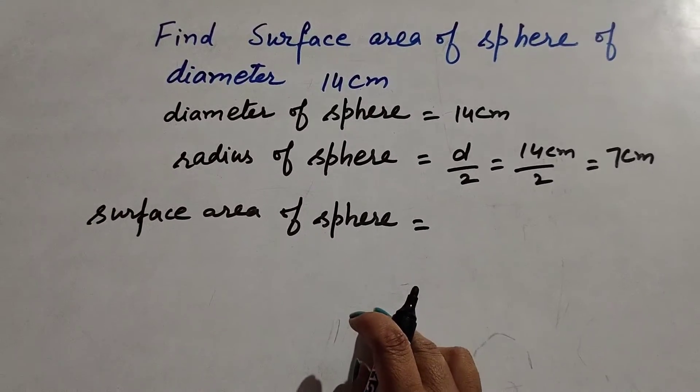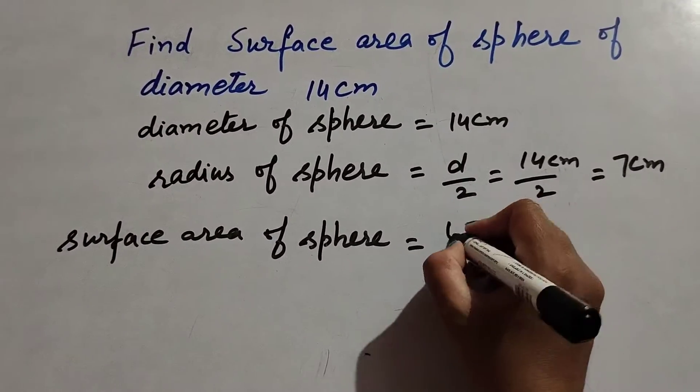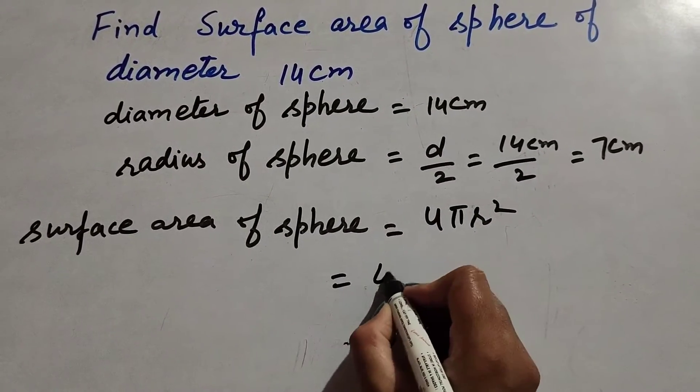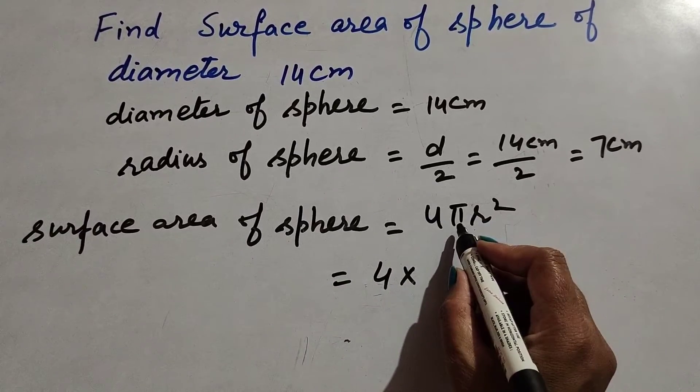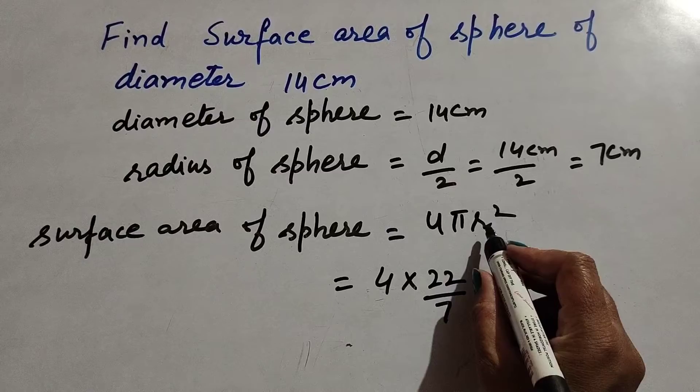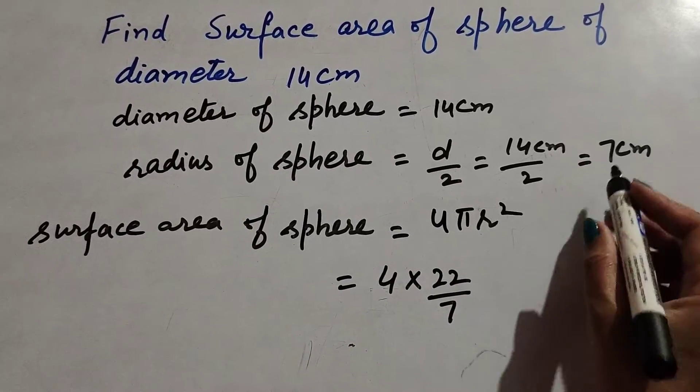So we know the formula to find surface area of sphere: it is 4πr². It is equal to 4 into π, its value is constant 22 over 7, r² where r is radius, it is 7 centimeter, 7 centimeter squared.